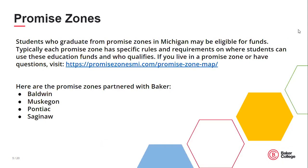Before we move on to work study, I want to take a minute to talk about Promise Zones. Promise Zones in Michigan are an opportunity to help pay for college for students if they graduate from a Promise Zone high school and meet the zone's criteria. On this slide I've listed some Promise Zones which are affiliated with Baker College. If you're a part of one of these communities, I encourage you to reach out to them and see if you're eligible for aid. If you're curious if you live in a Promise Zone, you can find more information at the website listed on the slide.